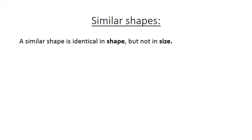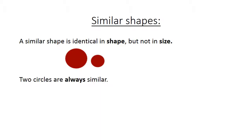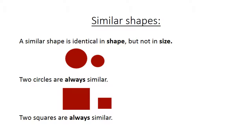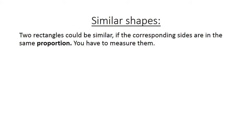Similar shapes. A similar shape is identical in shape but not in size. If you look at the two circles, two circles are always similar. Two squares are always similar. Two rectangles could be similar if the corresponding sides are in the same proportion — you have to measure them.